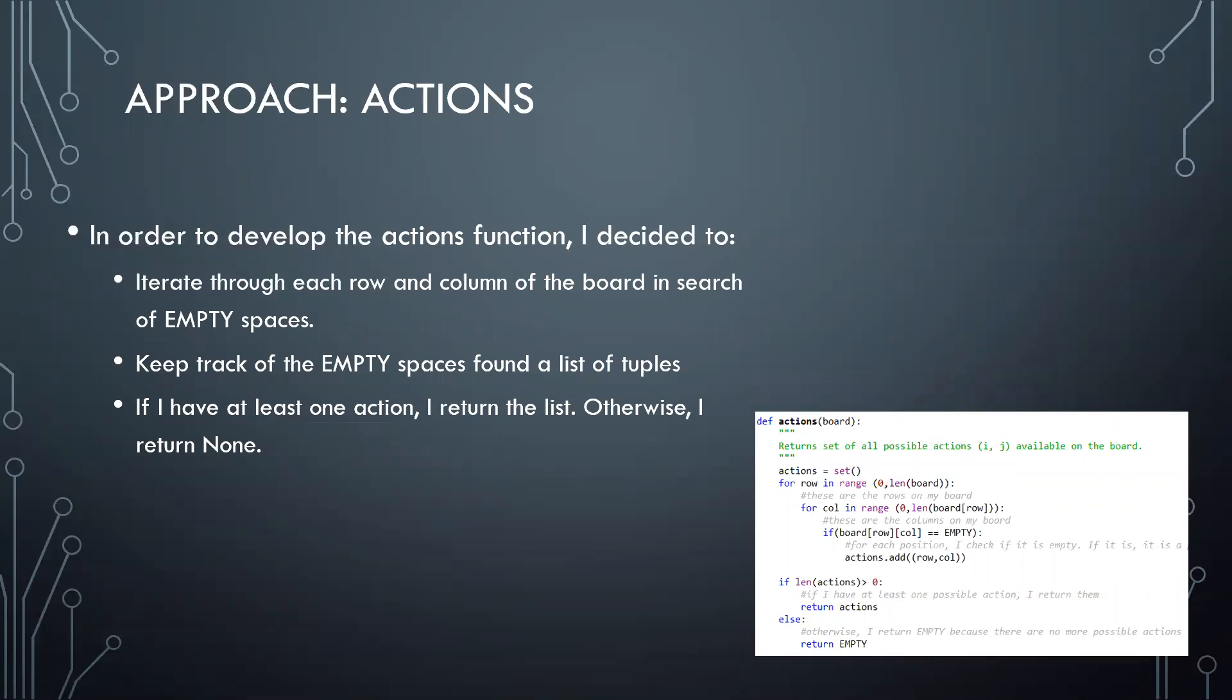Then the actions function. In order to develop the action function, I iterate through each row and column in search of empty spaces. I keep track of those empty spaces in a list of tuples. And if I have at least one action in this list, I return the list. Otherwise, I return none because there are no available actions.